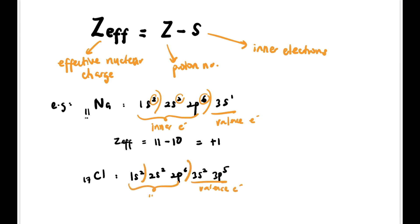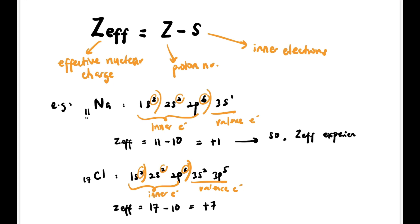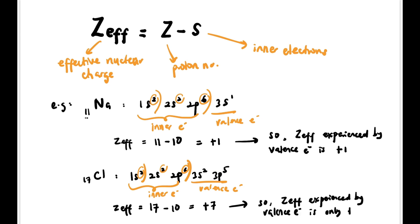For chlorine (atomic number 17), we write its electronic configuration. The valence electrons are 3s² 3p⁵, and all other electrons are inner electrons. So Zeff for Cl = 17 minus 10 = positive 7. That means positive 1 is the actual Zeff experienced by Na's valence electrons, and for Cl, the actual Zeff experienced by valence electrons is positive 7.